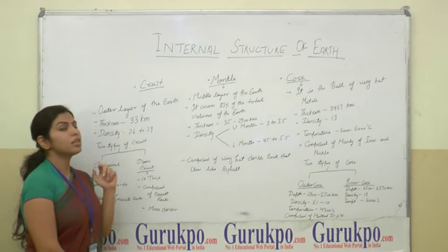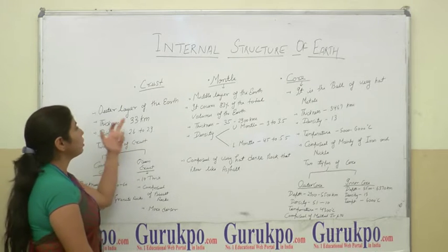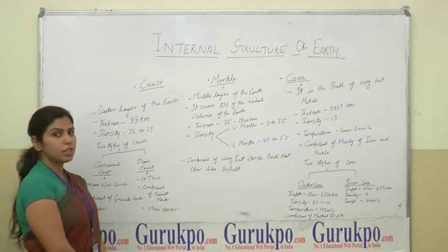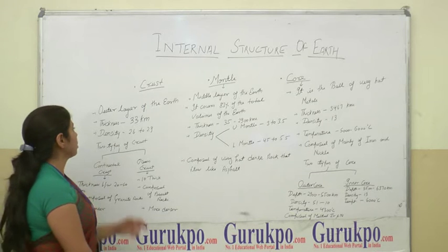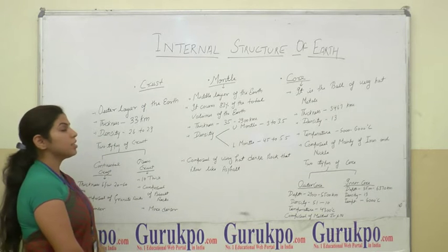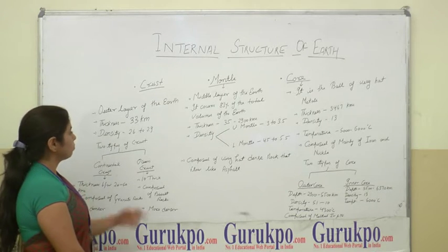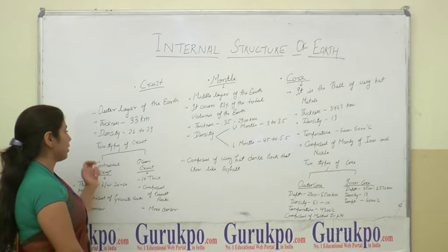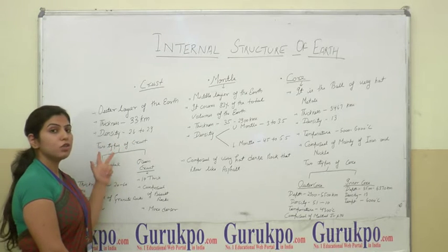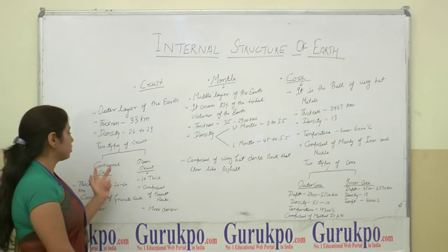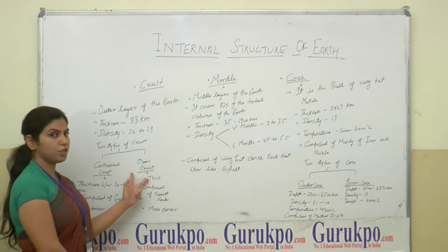The crust is the outer layer of the earth's surface. Its thickness is 32 kilometers and its density is 2.6 to 2.9. The crust is of two types: the continental crust and the ocean crust.